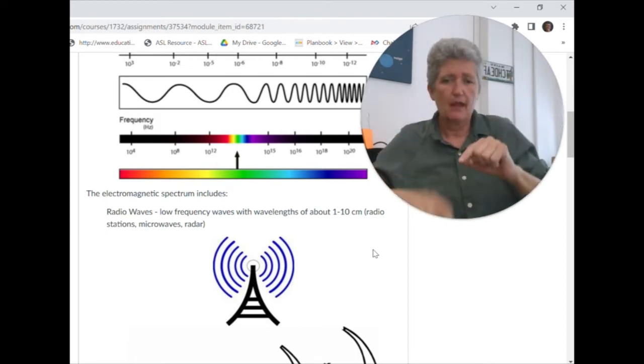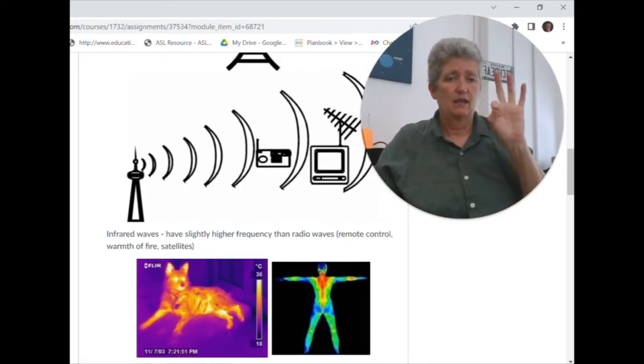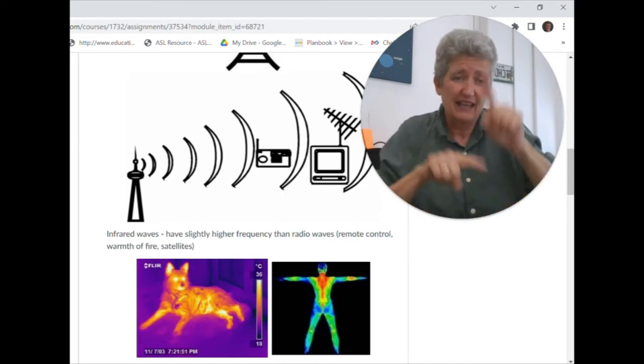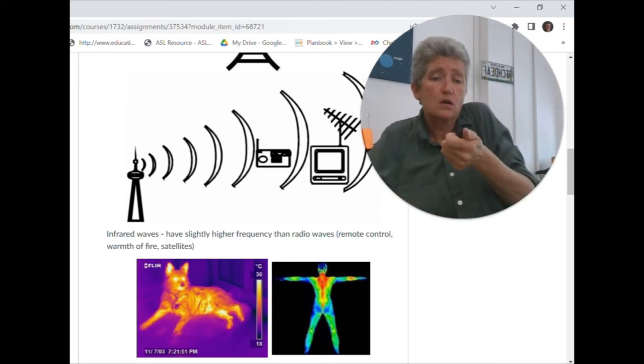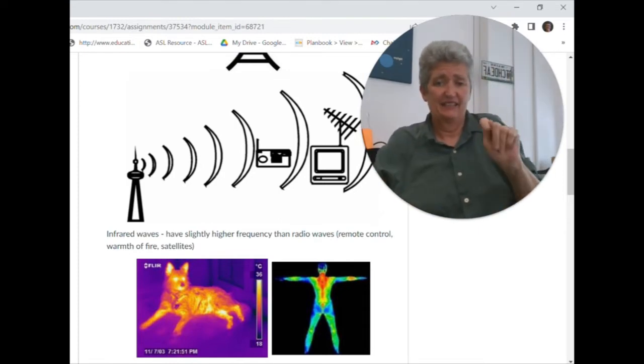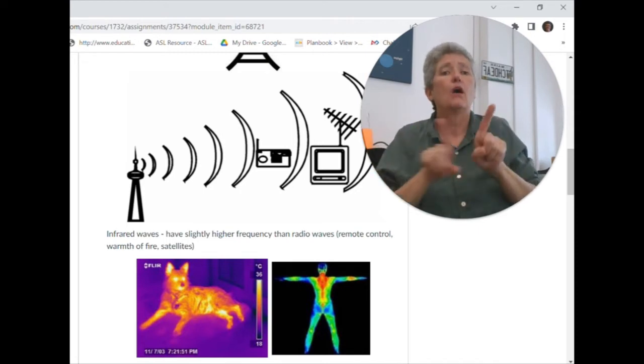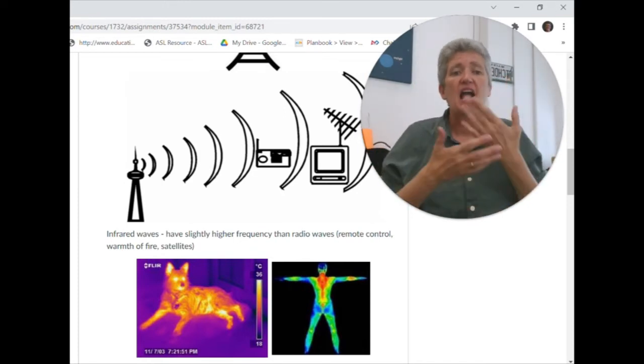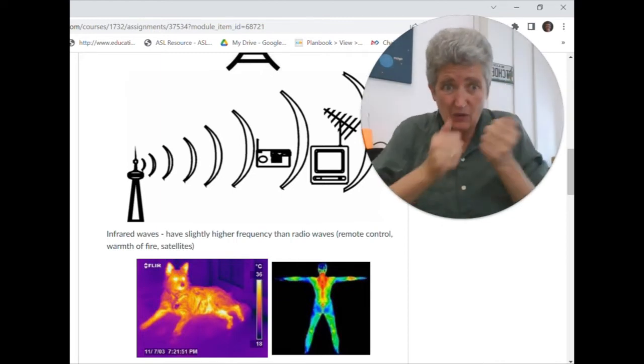And then infrared waves. It's not really red, signed red, because you can't actually see it. I've seen some people sign red for infrared, but it's not something you can see. That frequency is a little bit higher than radio waves. Like you use a TV remote or you see the warmth from a fire or the warmth on someone's skin. There are some special cameras that will show infrared, and it shows different colors for the different temperatures. It's kind of some cool equipment.